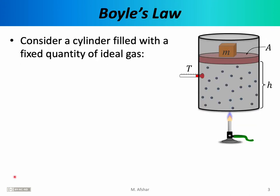It took more than 100 years of experimentation for physicists to fully understand the ideal gas. One of the first people to investigate properties of the ideal gas was Robert Boyle. To understand Boyle's experiments and the experiments of many subsequent physicists, consider a cylinder filled with a fixed quantity of ideal gas. Usually the inert elements from the periodic table make good ideal gases. For example, helium or neon gas at room temperature are good examples of an ideal gas.